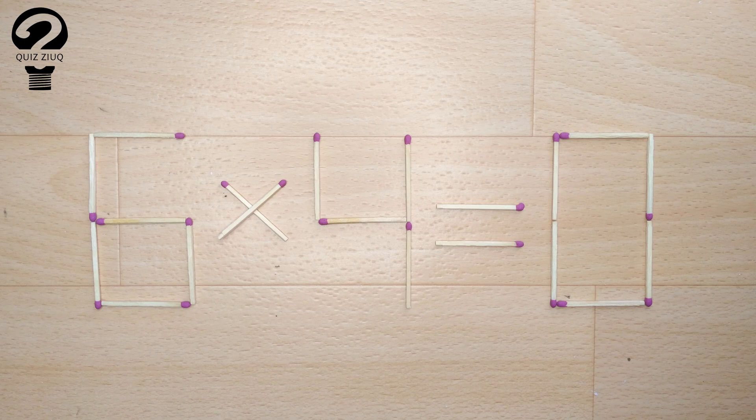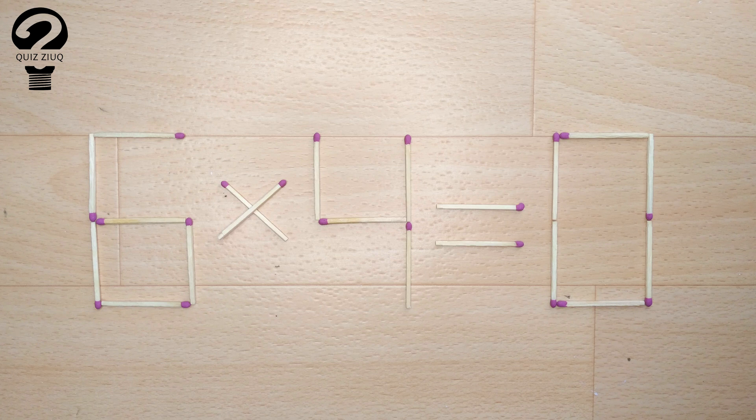We need to move two matches to make our equation correct. How is this puzzle solved? For this, we just need to move one match.